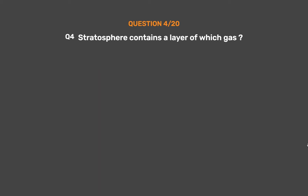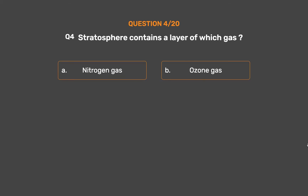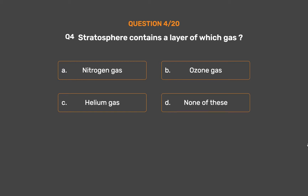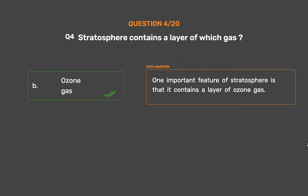Question number 4: Stratosphere contains a layer of which gas? Option A: Nitrogen gas. Option B: Ozone gas. Option C: Helium gas. Option D: None of these. The correct answer is Option B, Ozone gas. One important feature of the stratosphere is that it contains a layer of ozone gas.